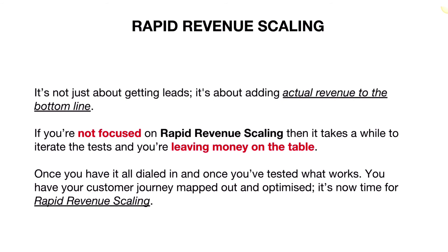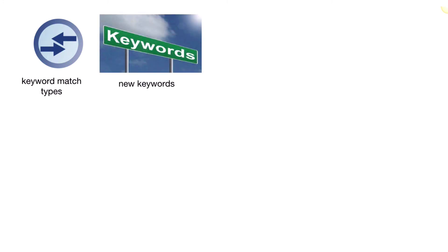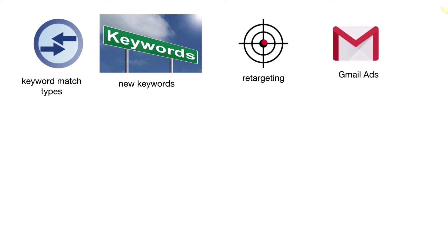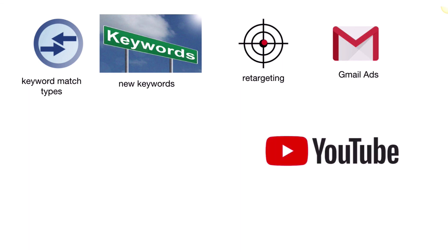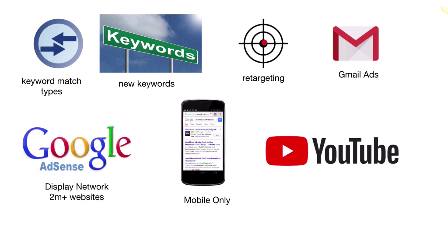Once you have it all dialed in and you've tested what works, you have your customer journey mapped out and optimized — it's now time for Rapid Revenue Scaling. You can change your keyword match types; maybe you're just using phrase and exact match — expand it to broad match. Maybe that'll get you more traffic and more sales from it. You can introduce new keywords to get more traffic. You can retarget people who visited your website who didn't buy and bring them back to purchase. You can use Gmail ads to target more people. You can use YouTube ads to drive traffic with video. You can create mobile-only ad campaigns that focus on people on mobile devices.